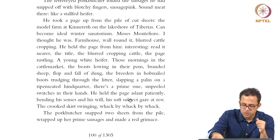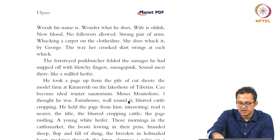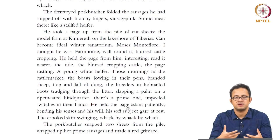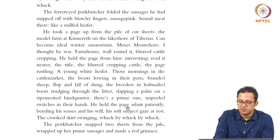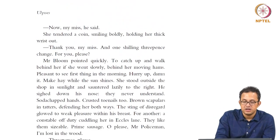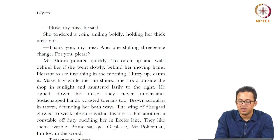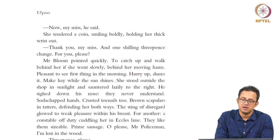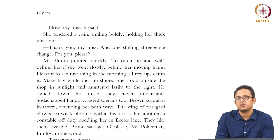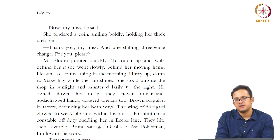The pock-butcher snapped two sheets from the pile, wrapped up the prime sausages and made a red grimace. 'Now, my miss,' he said. She turned to the coin, smiling boldly, holding her thick wrist out. 'Thank you, my miss — one shilling and three pence change. For you please?' Mr. Bloom pointed quickly to catch up and walk behind her, behind the moving hams. 'Pleasant to see, first thing in the morning. Hurry up, damn it. Make hay while the sun shines.' This is obviously Bloom being a voyeur, a sort of stalker — he sees this attractive woman and wants to follow her body with his gaze. The voyeurism is related to the very gritty, dirty Dublin realism which Ulysses is trying to convey.